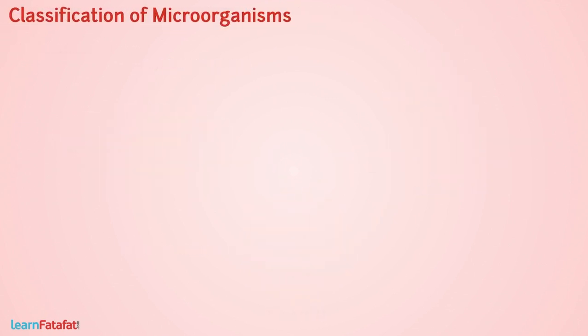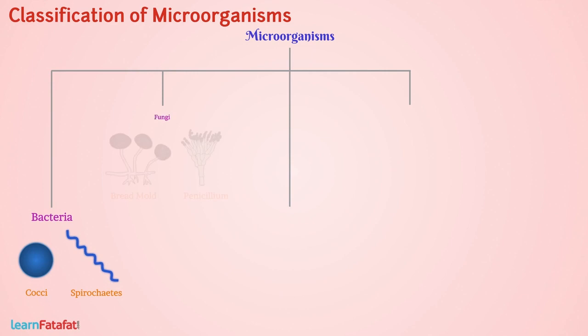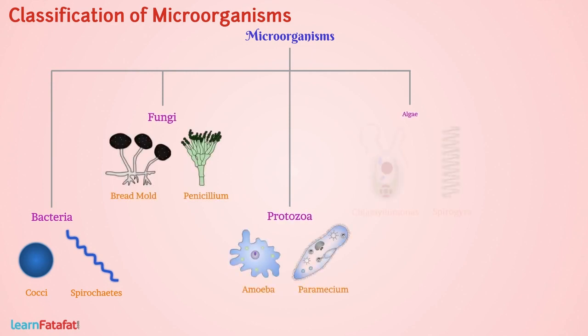Classification of microorganisms: microorganisms are classified into four groups — bacteria, fungi, protozoa, and algae.